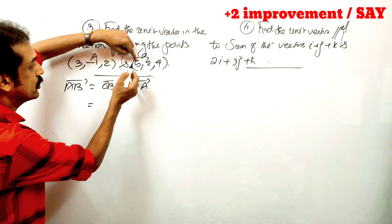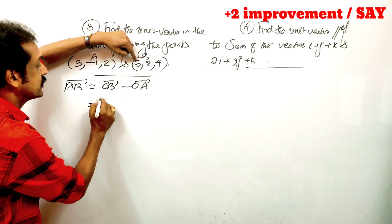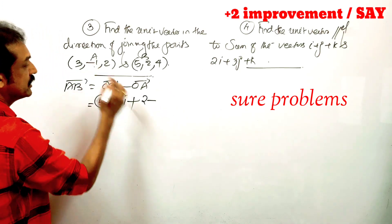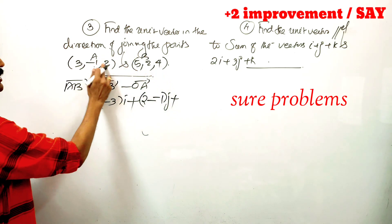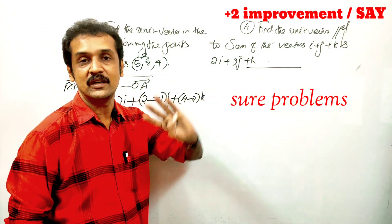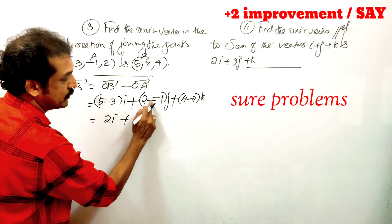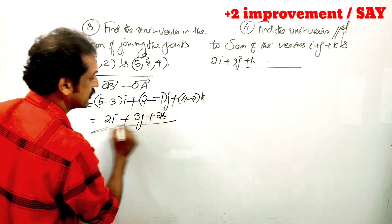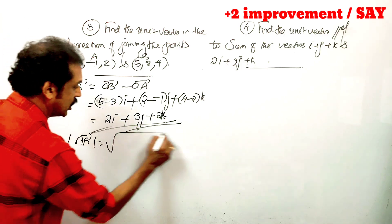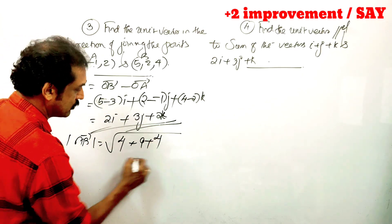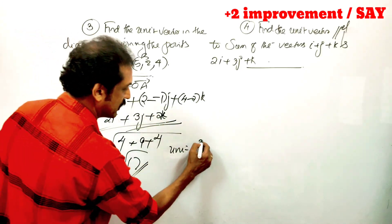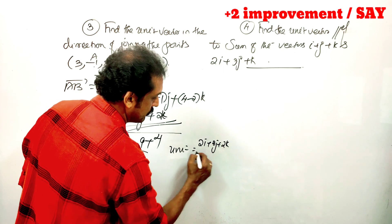The second point is (5, 2, 4) and the first is (3, -1, 2). So vector AB is: 5 minus 3 = 2i, 2 minus negative 1 = 3j, 4 minus 2 = 2k. The modulus of vector AB is root of 4 plus 9 plus 4, that is root of 17. Therefore the unit vector is equal to 2i plus 3j plus 2k by root of 17.